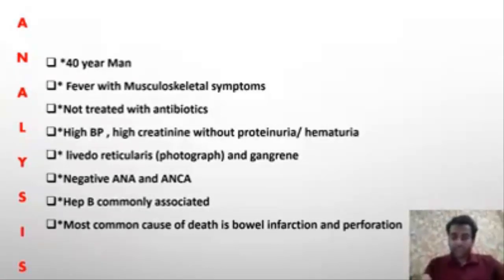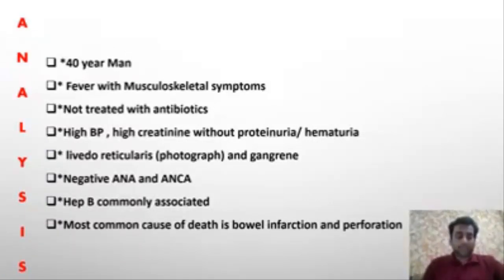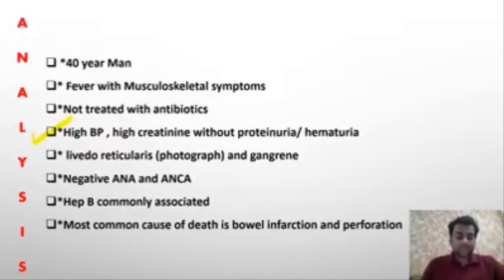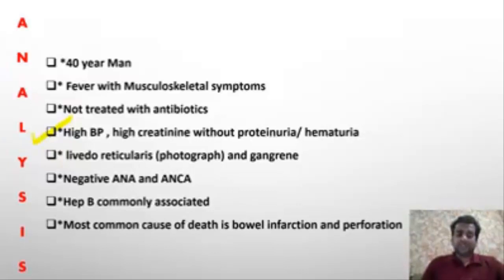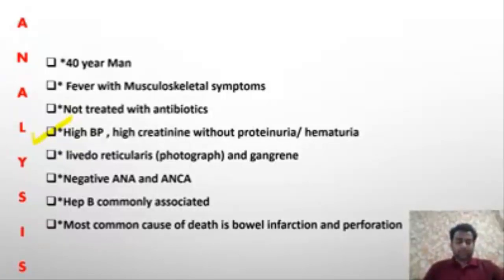Among non-infective causes, autoimmune diseases play a very important part. The patient has high blood pressure and high creatinine, but no proteinuria or hematuria — meaning renal arteritis without glomerulonephritis. This renal arteritis has led to renal ischemia, which secondarily activated the renin-angiotensin system, causing high blood pressure. The skin showed livido reticularis and there was also gangrene.